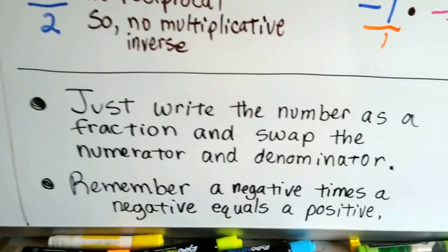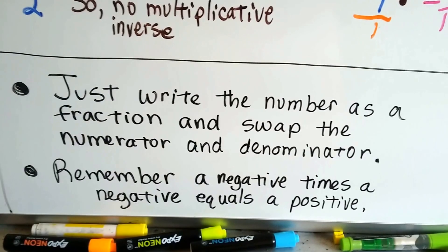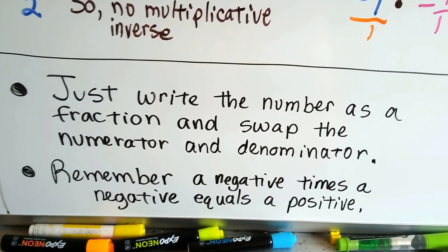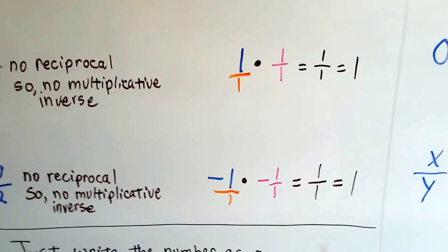So just write the number as a fraction and swap the numerator and denominator. And if it's already a fraction, just swap the numerator and denominator. But remember, a negative times a negative equals a positive. So if we've got two negatives, it's going to equal a positive.